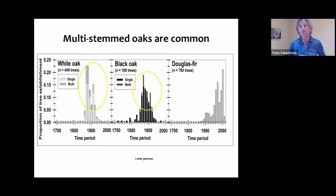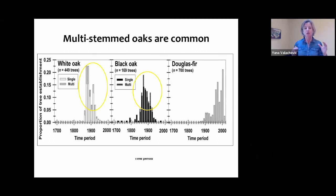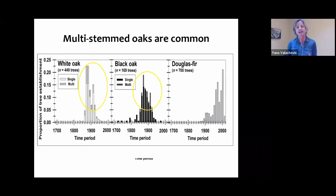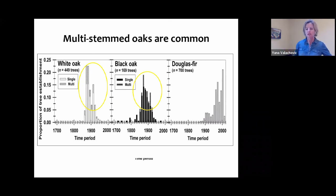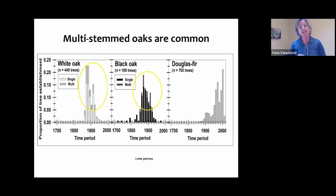One particularly interesting question is how many of today's oak trees are from multi-stem clumps as opposed to single-stem clumps. When you have a multi-stem clump, it reflects some kind of past disturbance — whether fire or mechanical damage — meaning the genetics were already on the site: an original tree was present, experienced disturbance, and then re-sprouted. Looking at our white oak and black oak, 25 to 30% of the regeneration is from multi-stemmed individuals, telling us the genetics have been there longer than the establishment time period. That's an important attribute when thinking about restoration.